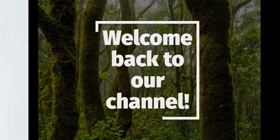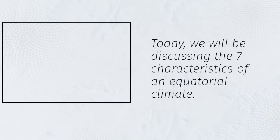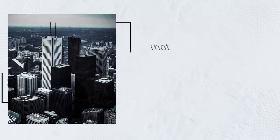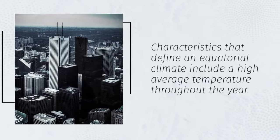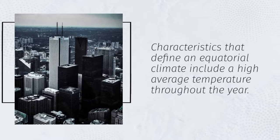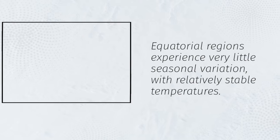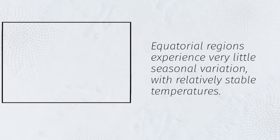Welcome back to our channel. Today, we will be discussing the seven characteristics of an equatorial climate. Characteristics that define an equatorial climate include a high average temperature throughout the year. Equatorial regions experience very little seasonal variation, with relatively stable temperatures.